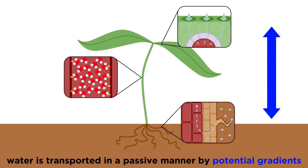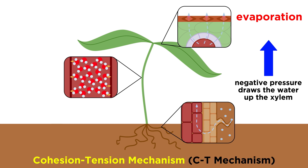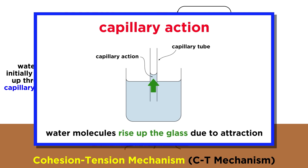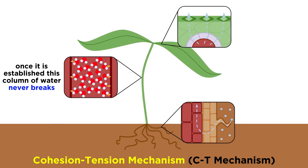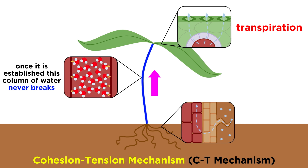Water is transported in a passive manner through the plant by pressure and chemical potential gradients. Specifically, this movement is driven primarily by potential differences in water caused by the negative pressure differential generated by the evaporation of water from the leaves. This process is known as the cohesion-tension mechanism, or CT mechanism. Essentially, the water is initially pulled up through the xylem due to the cohesive and adhesive properties of water — in this case referred to as capillary action. But as the plant grows, there is never a break in the water column within the plant. As water evaporates from the leaves, it draws the water column upwards against gravity, causing tension. This process, which is responsible for the tension part of the CT mechanism, is known as transpiration, and it occurs when water evaporates from a plant's leaves into the air.